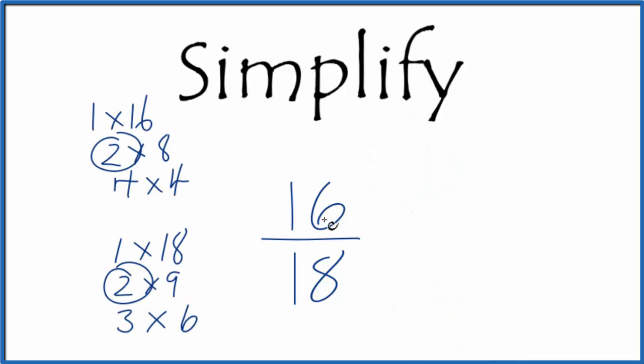16 divided by 2 gives us 8, and 18 divided by 2 gives us 9. So 8/9 is the simplified fraction for 16 over 18. We've reduced this fraction to its lowest terms; you can't simplify this any further. This is Dr. B simplifying the fraction 16 over 18. Thanks for watching.